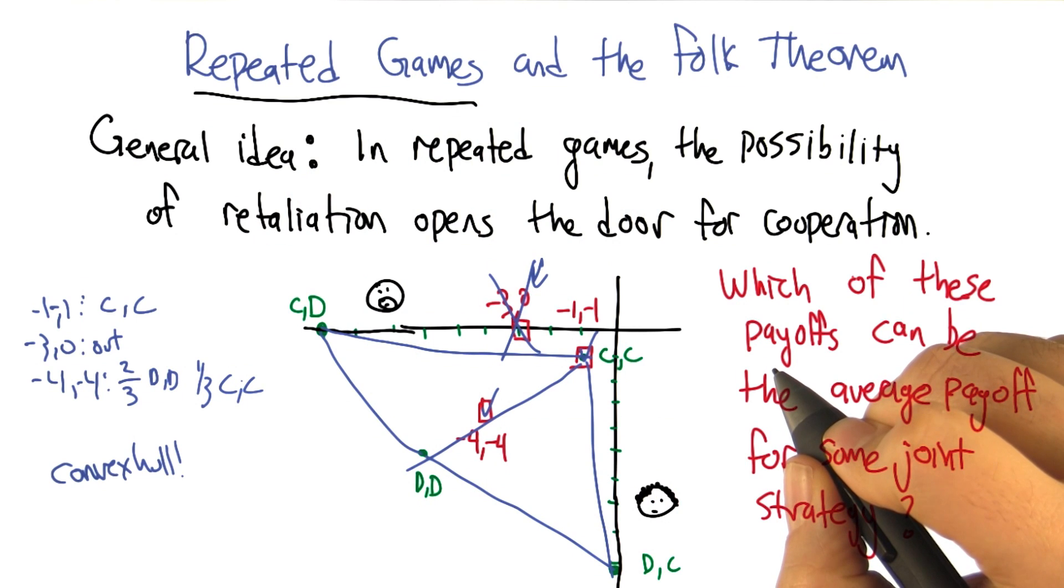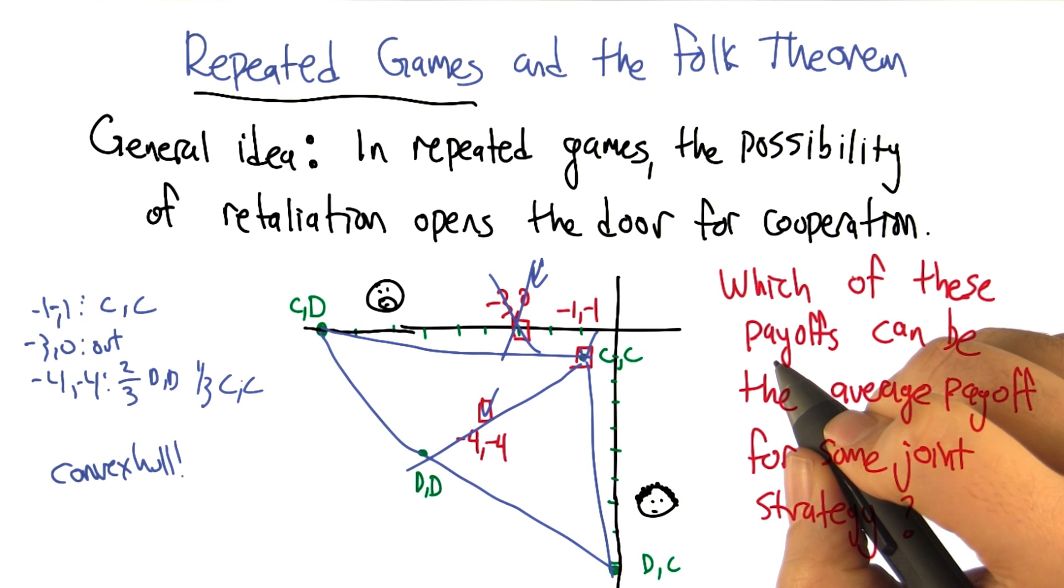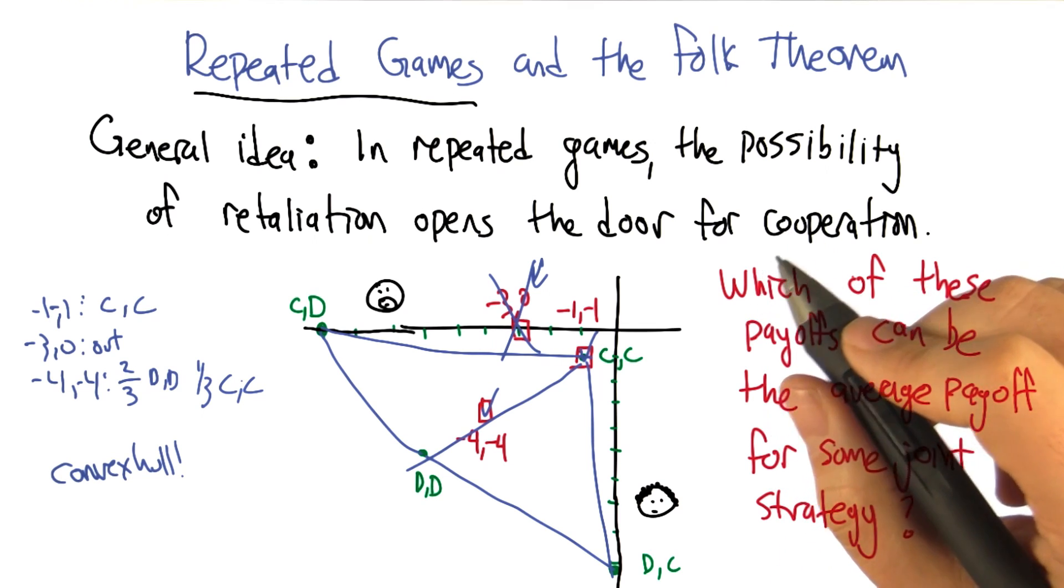And I get that by noticing that d, d is minus six, minus six, and c, c is minus one, minus one. And minus four, minus four is two-thirds of the way between there. Boom.